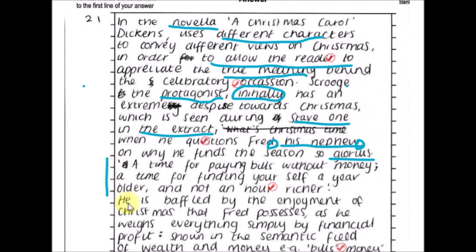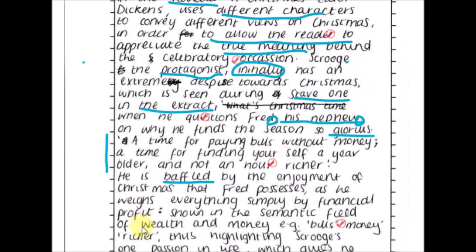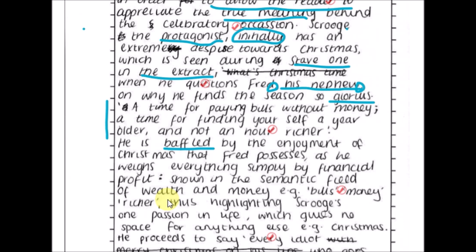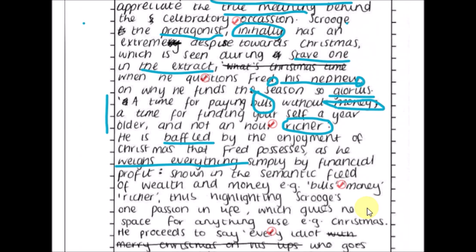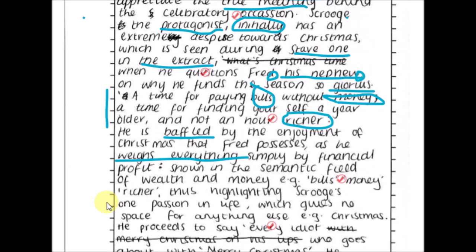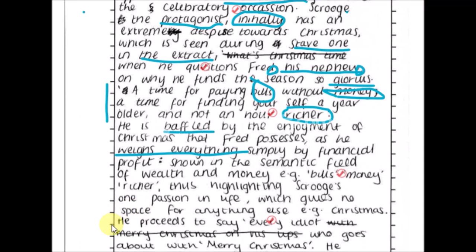The quotation selected from the extract is a bit long, but the student then comments that Scrooge 'weighs everything simply by the financial profit of it.' 'Weighs everything' is a lovely phrase. This is shown in the semantic field of wealth and money — e.g., 'bills,' 'money,' 'richer' — so even though the quotation was long, they've used those three words to explore the semantic field, a select collection of words linked to similar meanings, in this case to do with wealth and money.